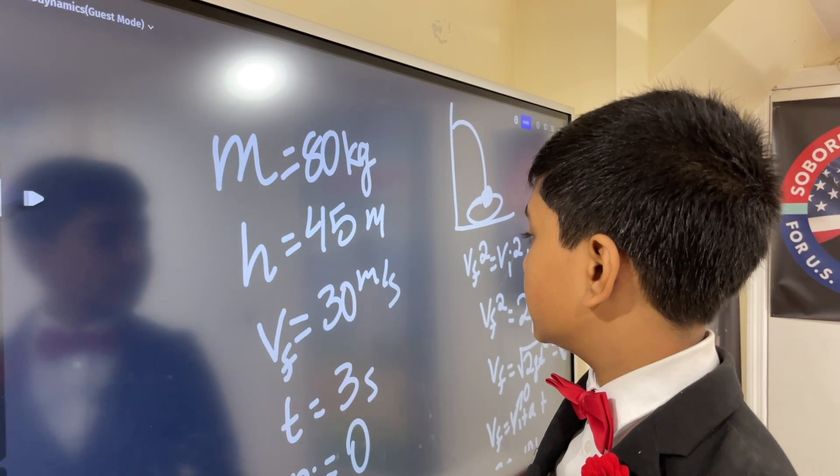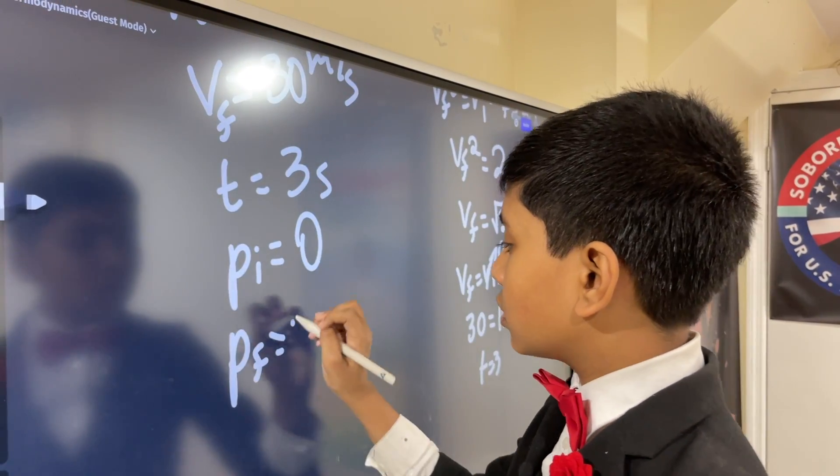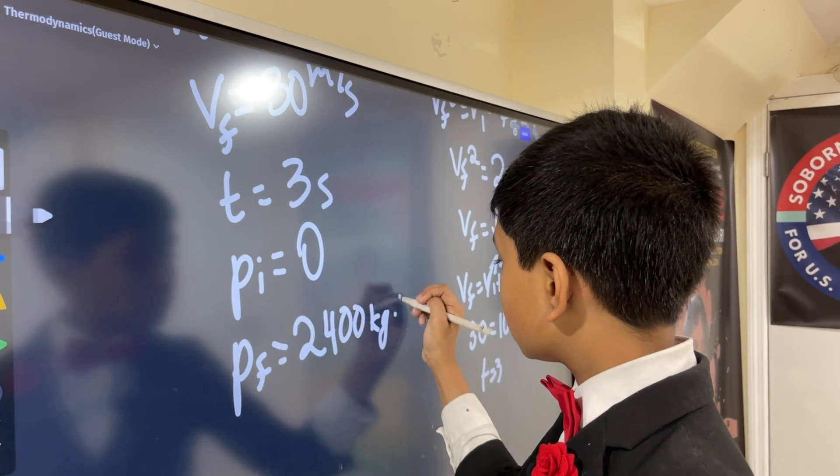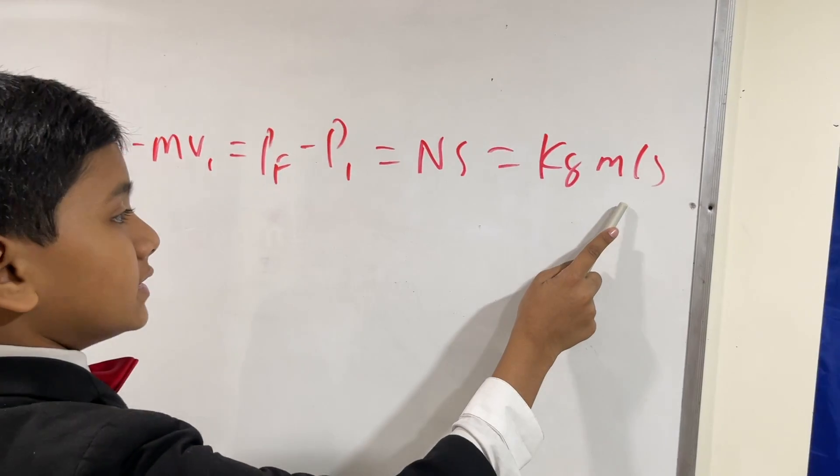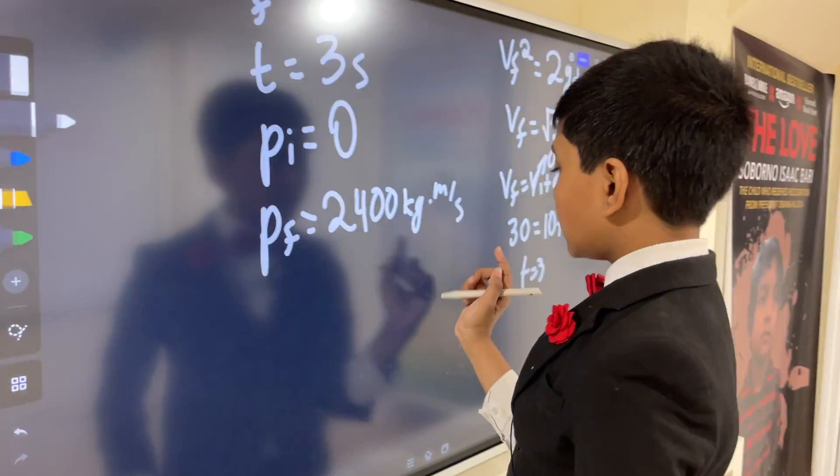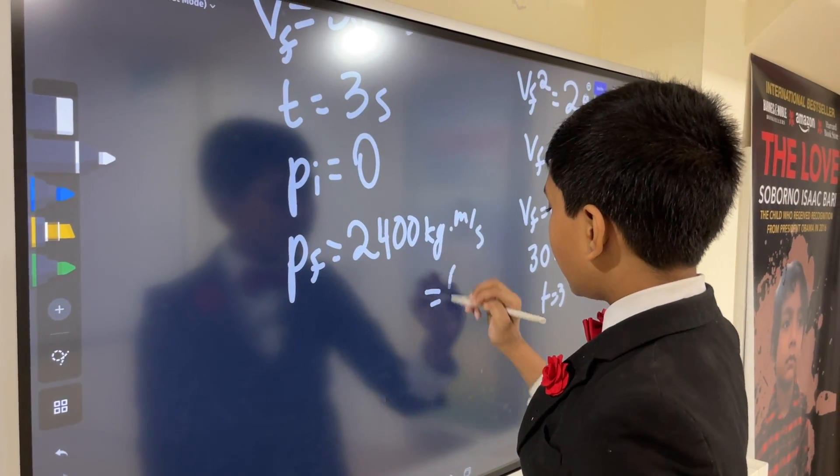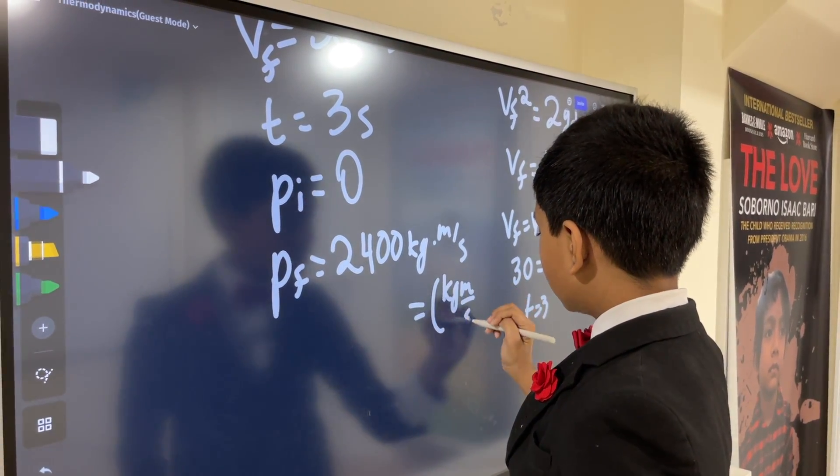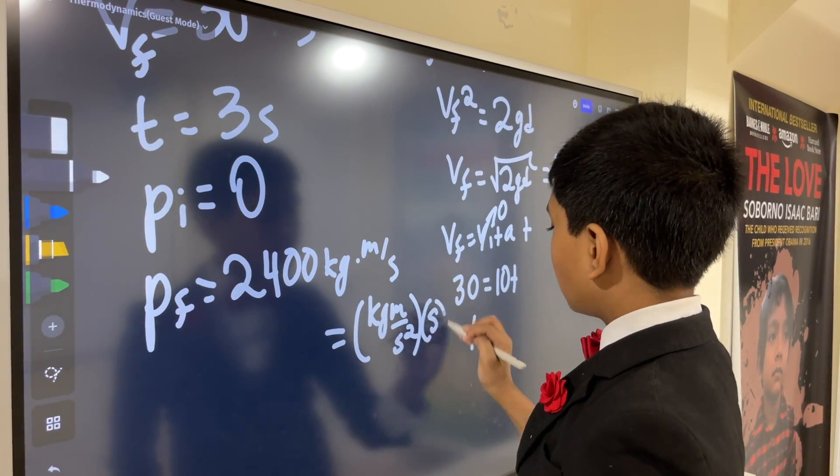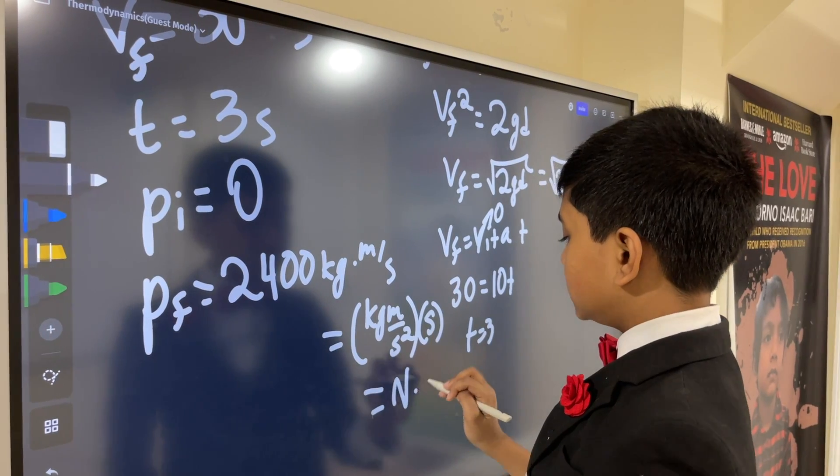times vf, which is 30 meters per second. So that's going to be 2,400 kilograms meters per second, which actually explains one of these things that's written over there. And kilogram meters per second, and kilogram meters over seconds squared times one second, or in other words, a newton second.